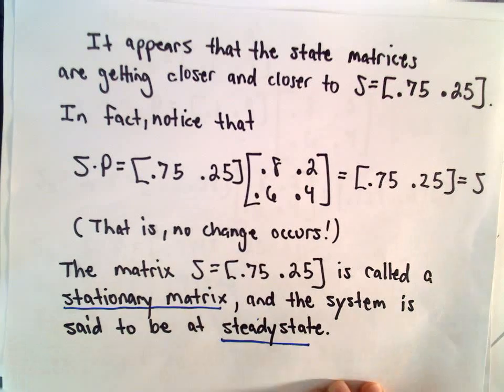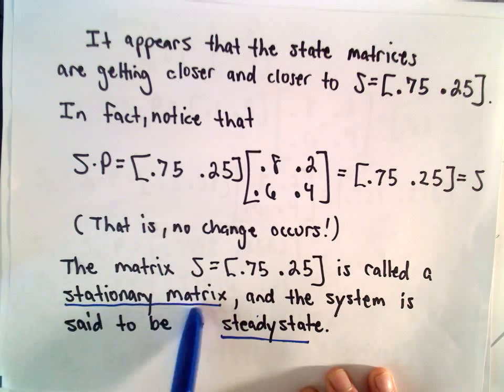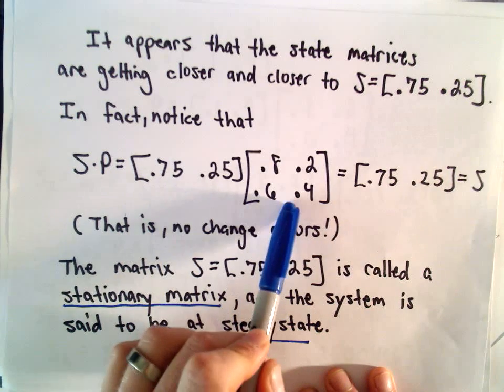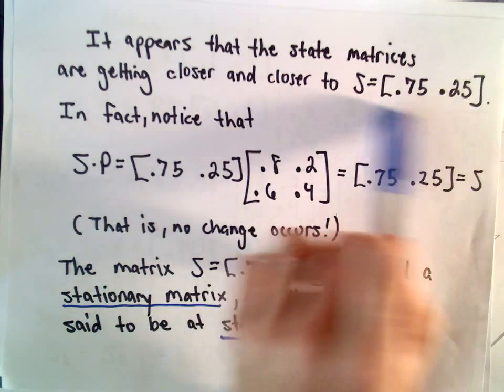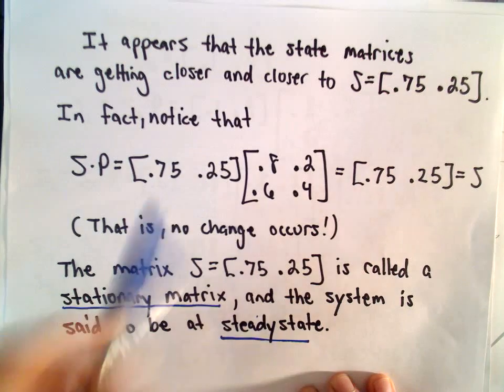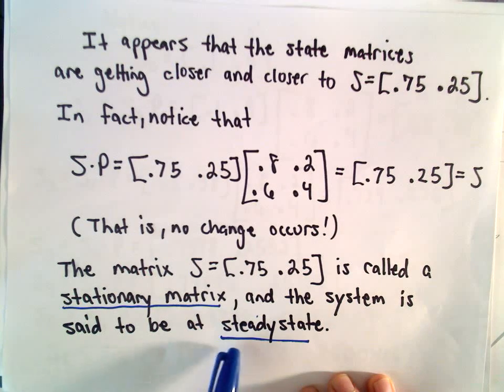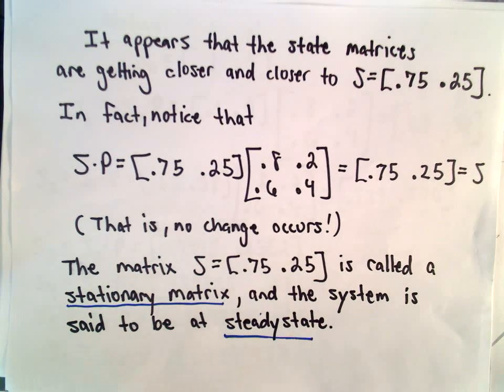So this matrix S, this is what's called a stationary matrix. We're multiplying by this transition matrix and we're getting the exact same thing back. We call that matrix S a stationary matrix. And our system here, our Markov chain, we say that it's at steady state. Nothing's happening in terms of the market share. You're at a steady state, staying at 75% of the market.